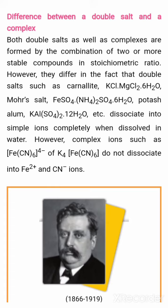Double salts dissociate into simple ions completely when dissolved in water. However, complex ions such as [Fe(CN)₆]⁴⁻ or K₄[Fe(CN)₆] do not dissociate into Fe²⁺ and CN⁻ ions.